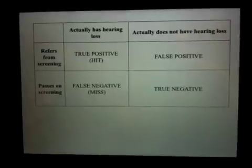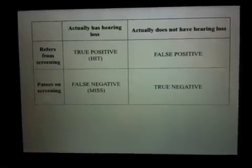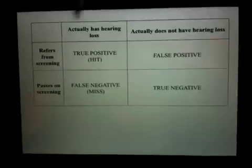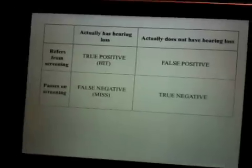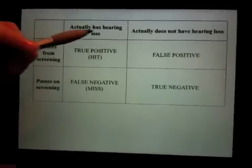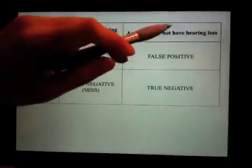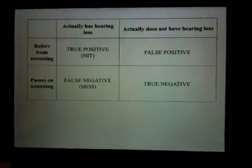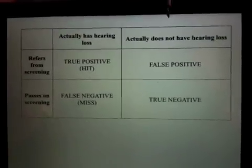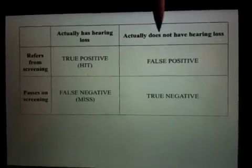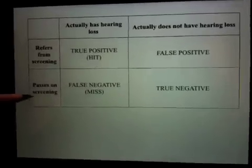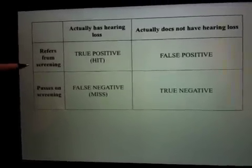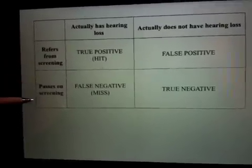Here I have a 2x2 matrix. Across the top, the first row is actual status — whether or not someone truly has a hearing loss or truly does not have a hearing loss. In the first column are the results from the screening: refers from the screening, or passes on the screening.